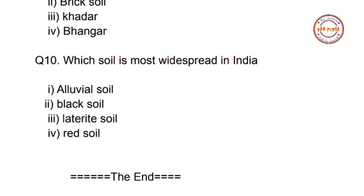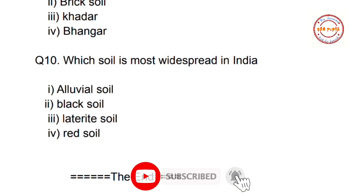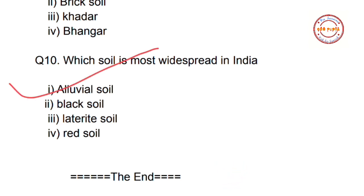Question number ten, the last question of part seven: which soil is the most widespread in India? As discussed in a previous part, the correct answer is option one — alluvial soil is the most widespread in India. That's all for this video; we'll meet in another part. Till then, take care.